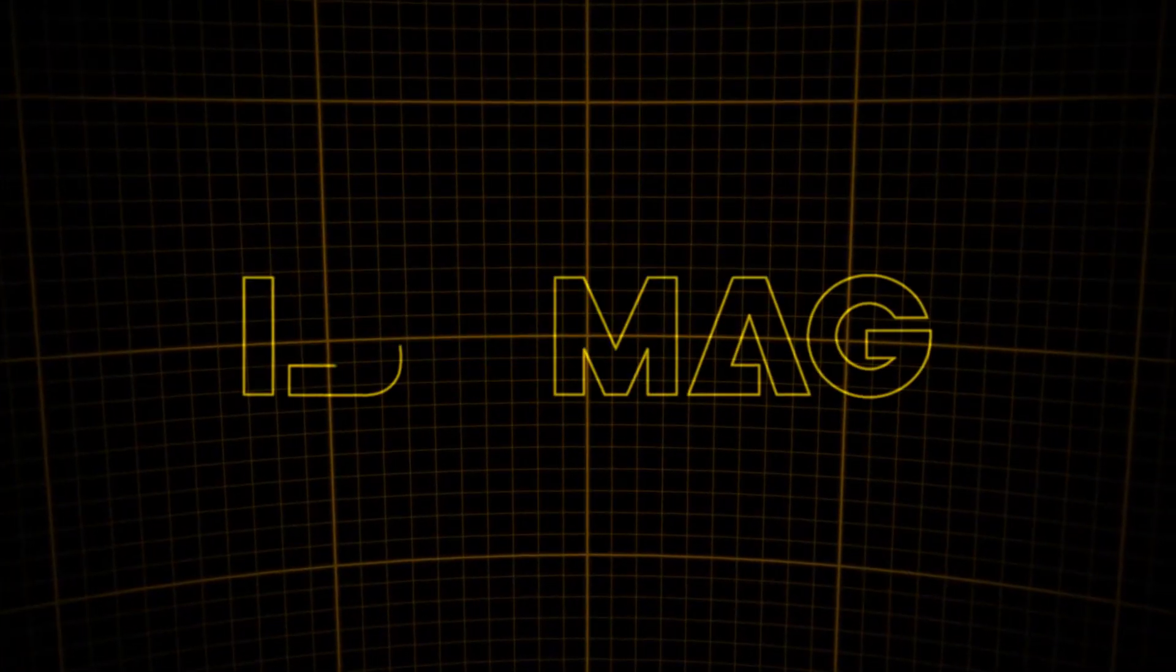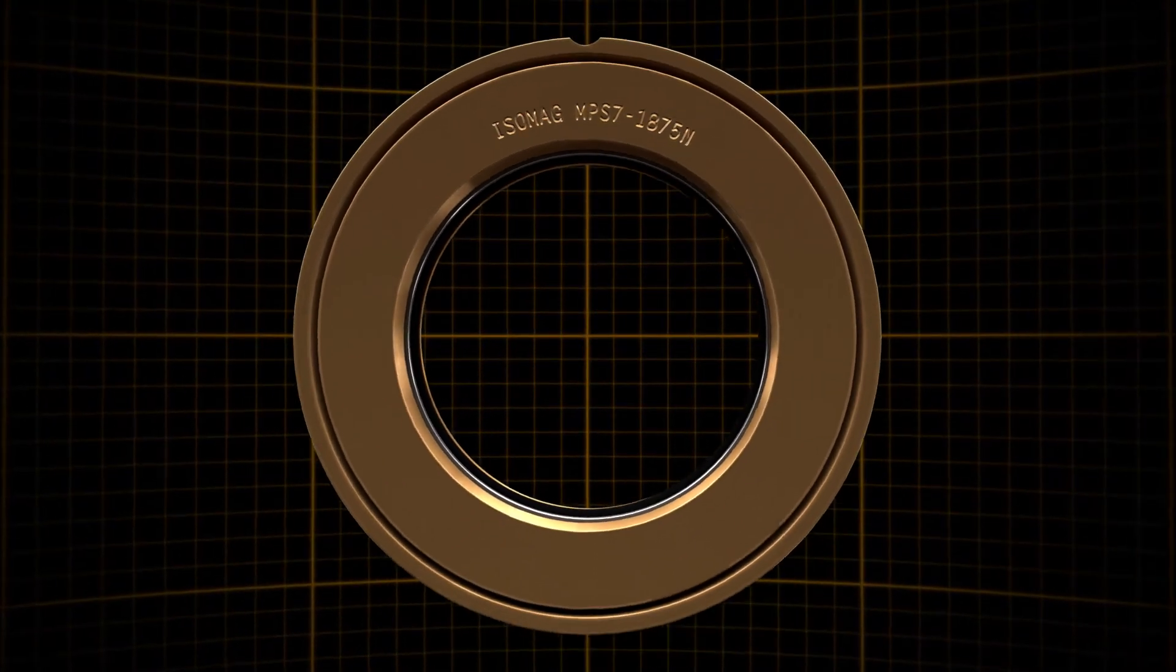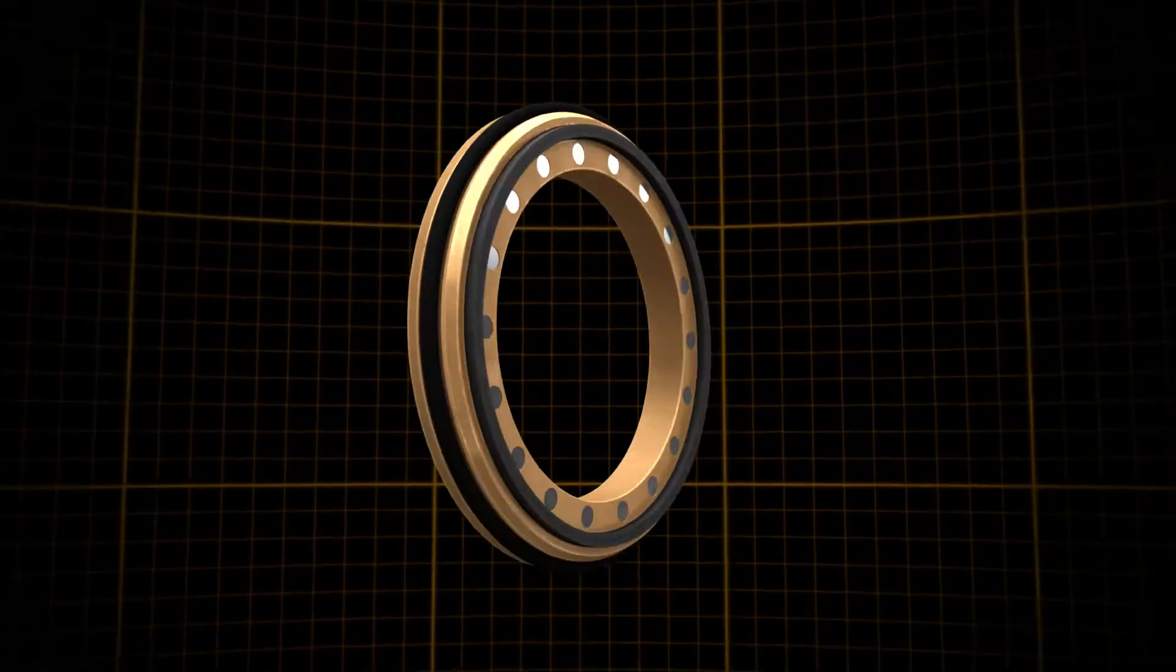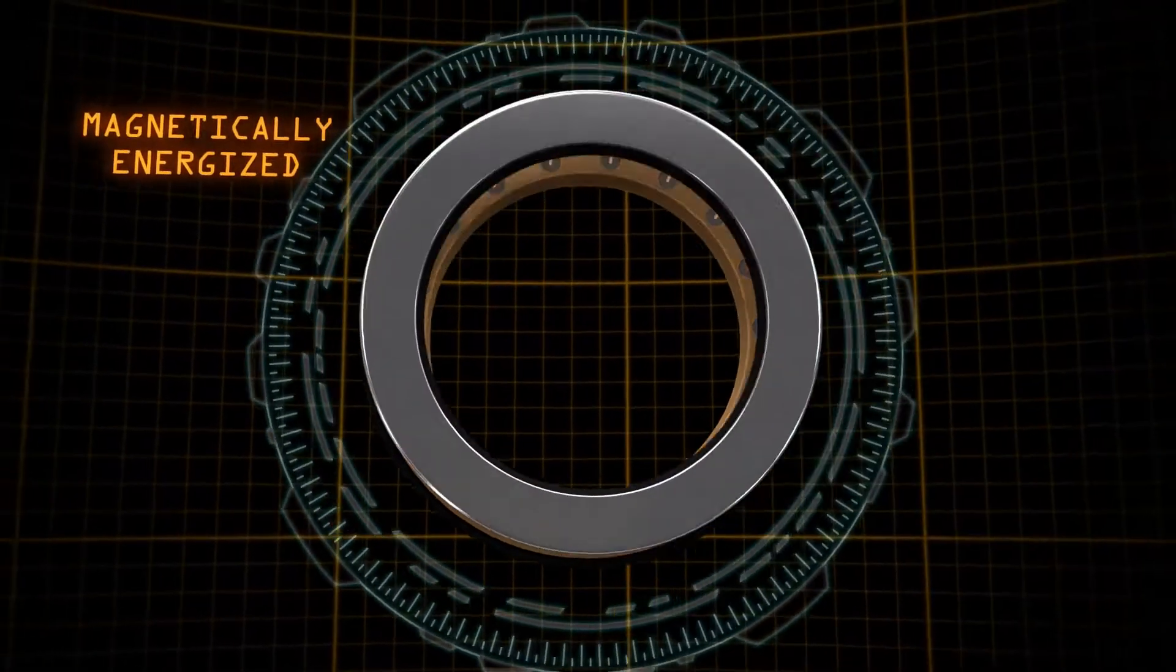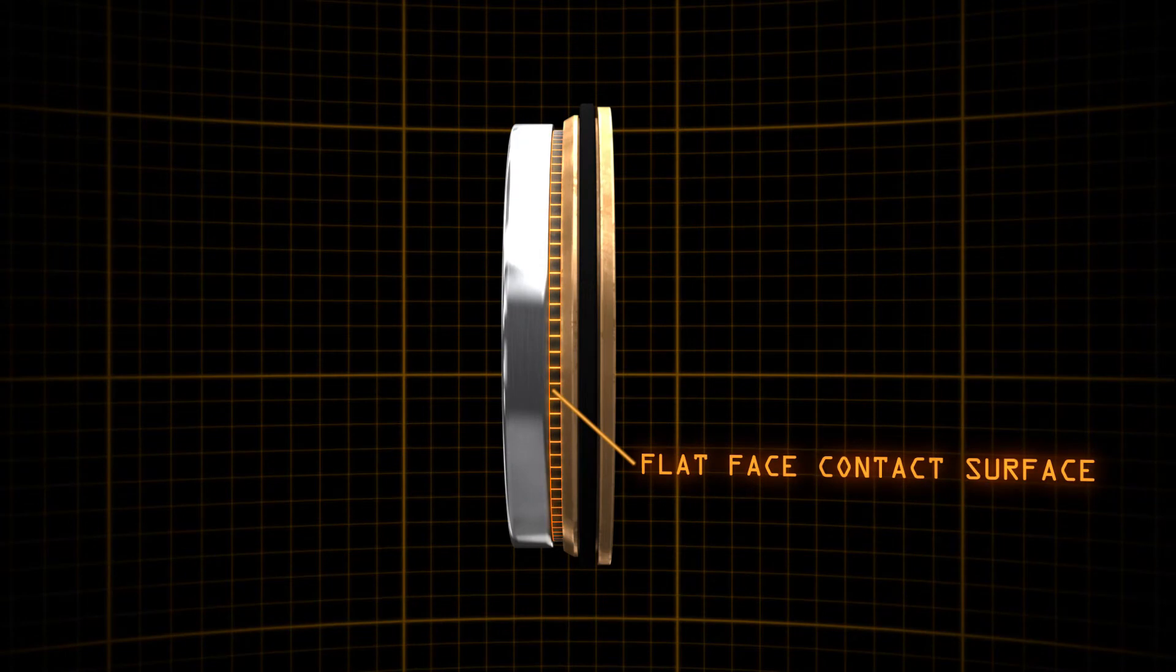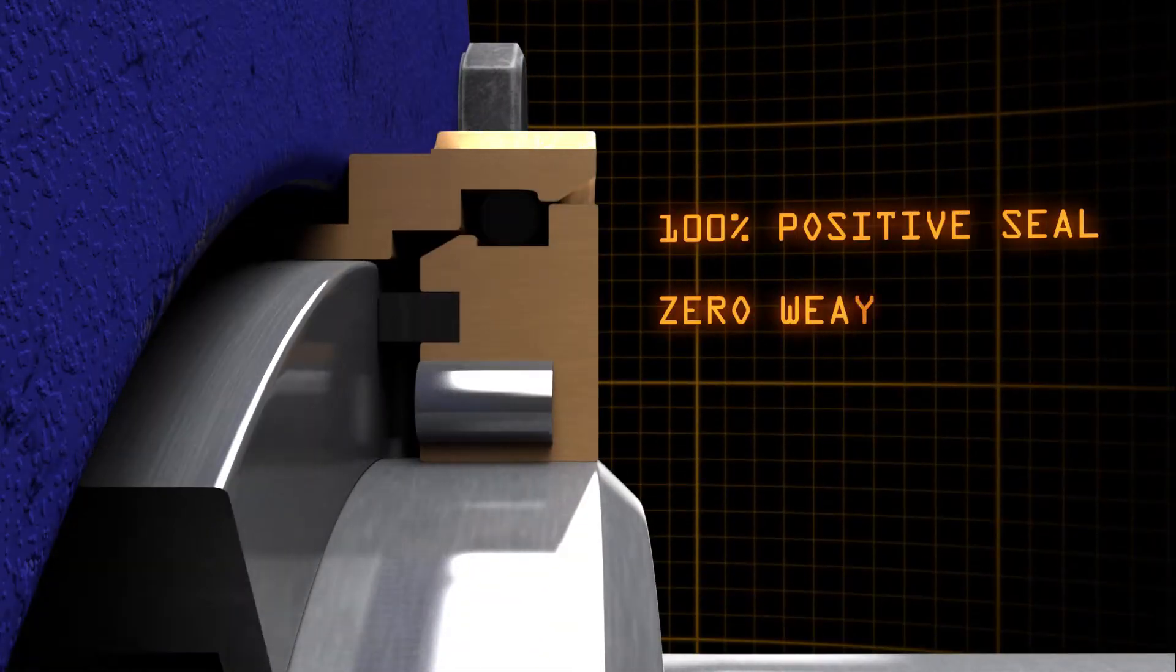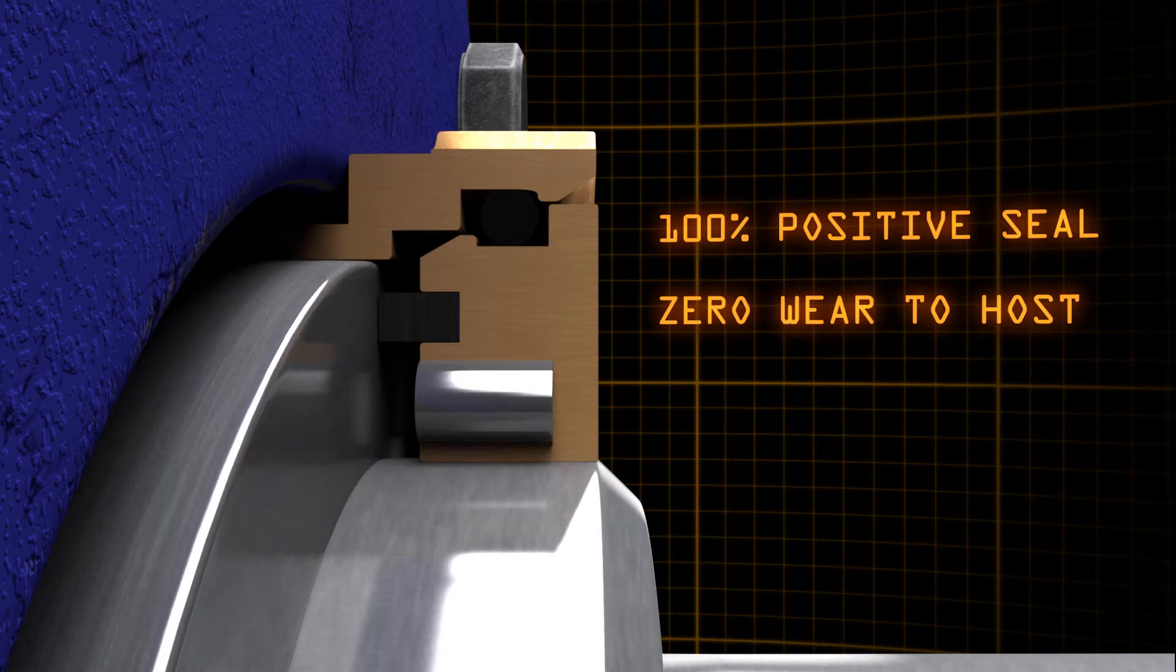Enter Isomag. Our seals close the leak path inherent to labyrinth seals by incorporating a magnetically energized flat face contact surface, creating a positive internal seal without wearing the host equipment.